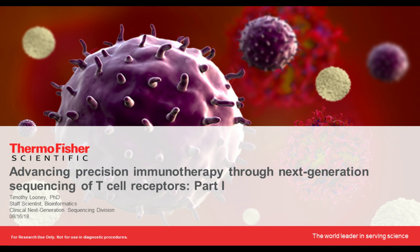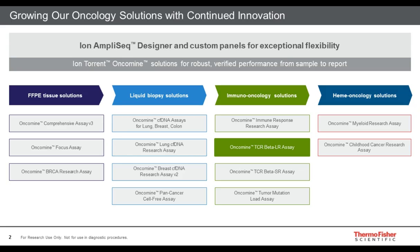Thank you for that very nice introduction. I'm going to talk to you today about the sequencing of T cell receptors. If you tuned in for the previous installment of this webinar series, you may have been introduced to our immuno-oncology portfolio. There are four assays within this portfolio: the Oncomine Immune Response Research Assay, a targeted gene expression profiling assay to understand the tumor microenvironment; the Oncomine Tumor Mutation Load Assay for profiling tumor mutation; and what I will focus on today — T cell receptor sequencing, in particular our Oncomine TCR beta LR assay, where LR stands for long read. In the next installment I'll discuss the TCR beta SR short read assay compatible with FFPE preserved materials.